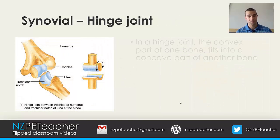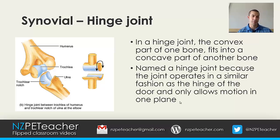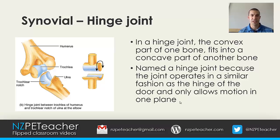In a hinge joint, the convex part of a bone fits into the concave part of another bone. It is named a hinge joint because it operates in a similar fashion to the hinge of a door — it only allows motion in one plane. The example shown is the elbow joint, where the humerus articulates with the ulna.